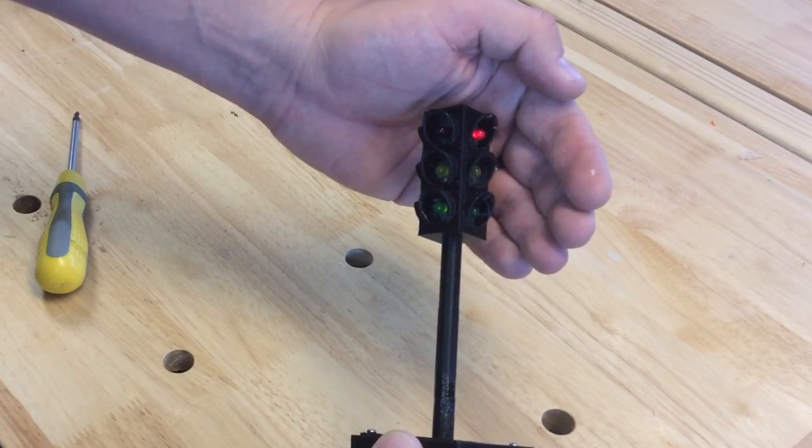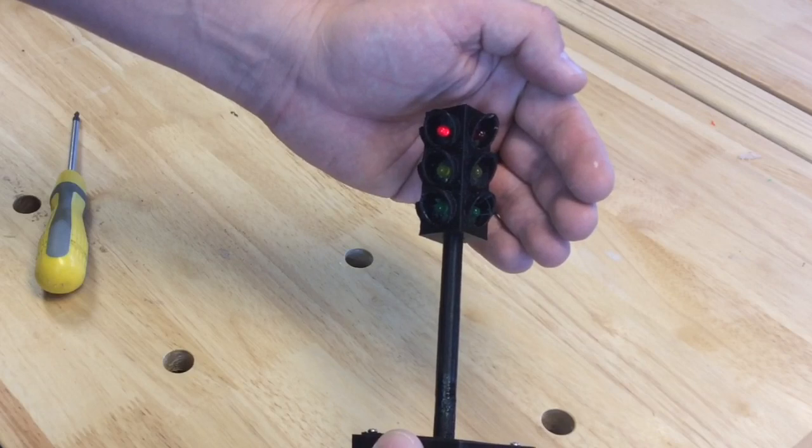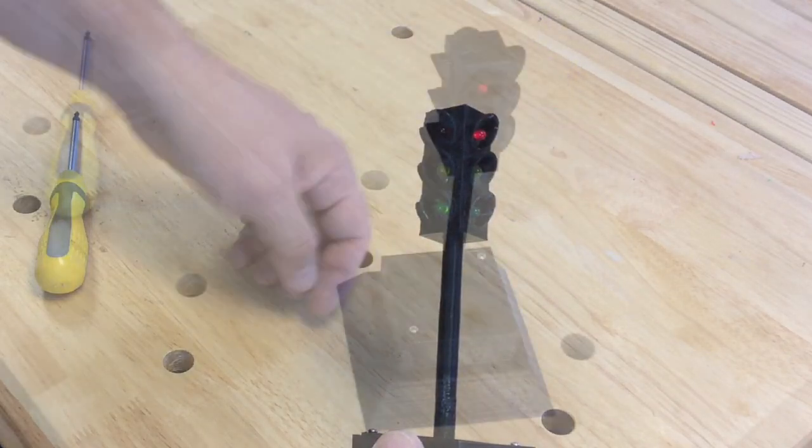And here it is, fully working. Now it's a little hard to see, because of the bright lights of the camera. But it goes green, yellow, and red. And on the opposite side, of course, when one side's red, the other side's green.